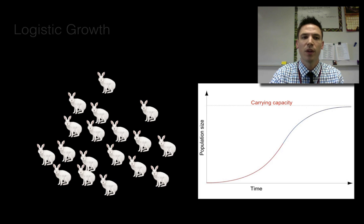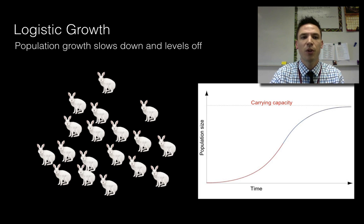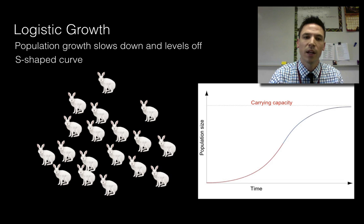We call this type of growth logistic growth. Logistic growth is when population growth slows down and eventually levels off and we describe this not using a j-shaped curve but what's called an s-shaped curve. You notice that the curve is shaped like the letter S.